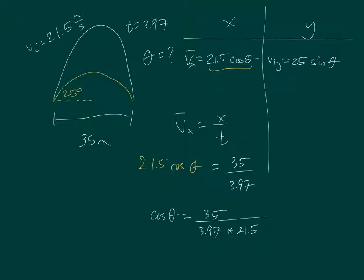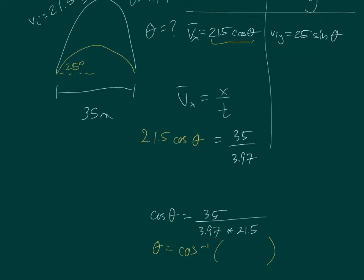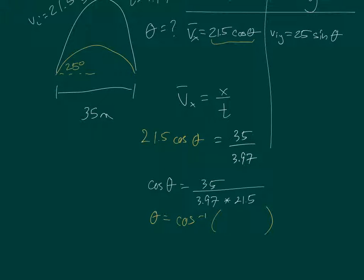To get theta by itself, how do you get rid of the cosine? Use cosine inverse, or cosine negative 1 — that's the function on your calculator. You take the cosine inverse of both sides. So theta is simply cosine inverse of whatever number came out of that fraction. You can type the whole fraction into your calculator, but remember to put parentheses around the denominator so it computes 35 over the product of 3.97 and 21.5 correctly.